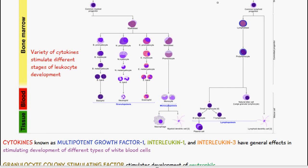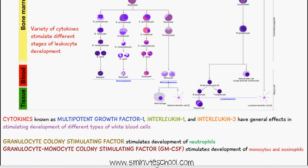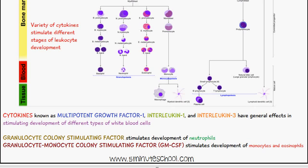Cytokines known as multipotent growth factor 1, interleukin-1, and interleukin-3 have general effects in stimulating the development of different types of white blood cells. More specifically, granulocyte colony-stimulating factor (G-CSF) helps to stimulate the development of neutrophils, and granulocyte-monocyte colony-stimulating factor (GM-CSF) stimulates the development of monocytes and eosinophils.